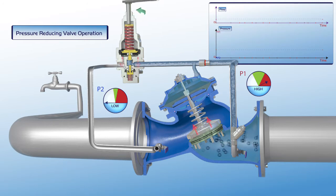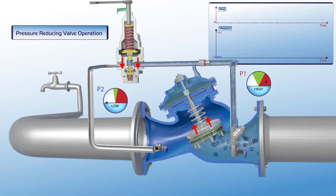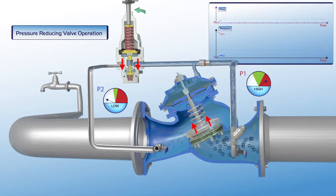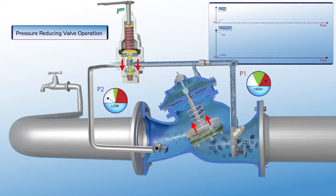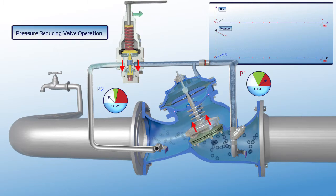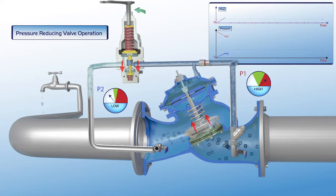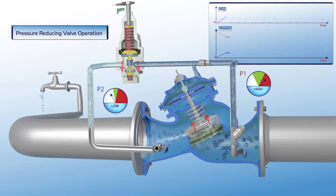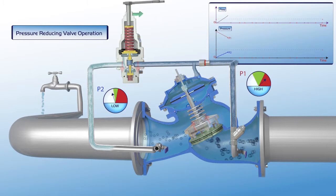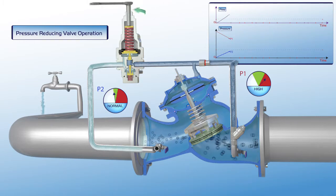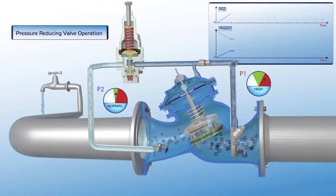The user gradually turns the pilot adjusting bolt clockwise. The pilot plunger is pushed downwards, causing a pressure drop in the valve's upper control chamber. This results in the gradual opening of the valve and filling of the consumer line. The downstream pressure stabilizes at the P2 gauge green zone.